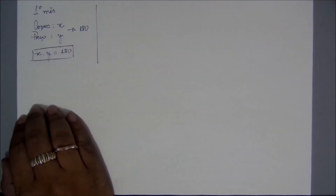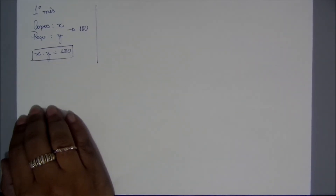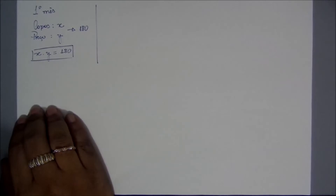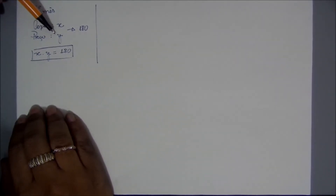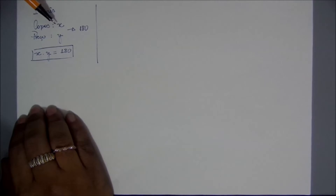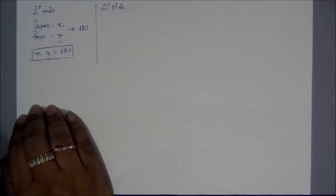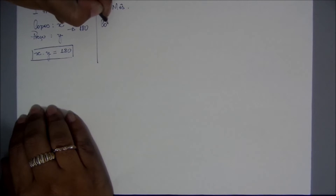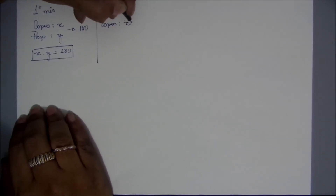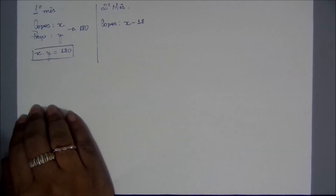Aí, ele comenta o seguinte, continuando o texto: no mês seguinte, ele aumentou o preço em 50 centavos e vendeu, em média, 18 unidades a menos. Mas a arrecadação foi a mesma. Ele afirma que aumentou o preço do produto e vendeu menos. O suco foi vendido a mais. Então, se meu Y representa o preço, ele aumentou o preço, e os copos também foram reduzidos. No segundo mês, o número de copos foi reduzido em 18 unidades, ficando X menos 18.